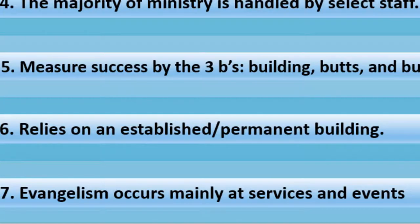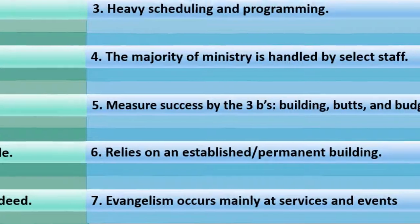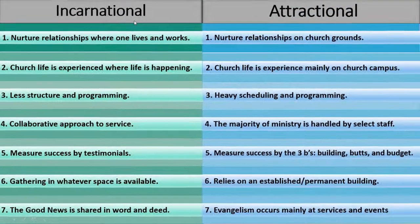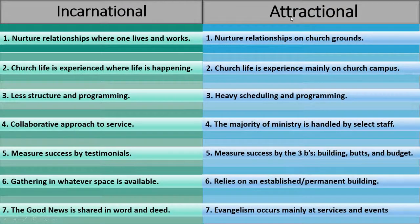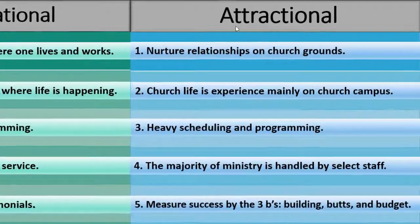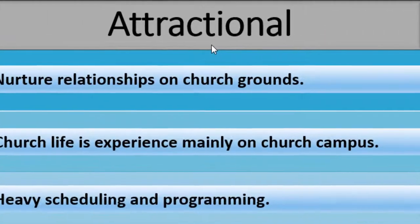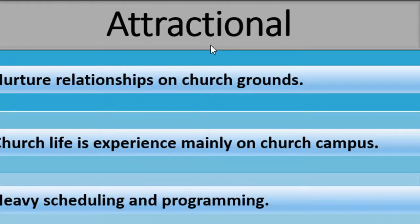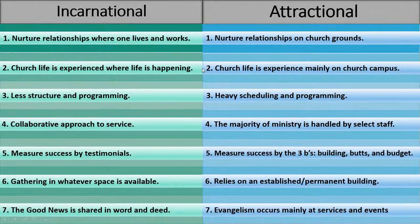After seeing the comparison between the two models, would you identify more with incarnational or attractional? The predominant church model in America is the attractional model, which focuses heavily on creating services, events, and activities to urge outsiders to leave their turf and join the culture of the Christian community. Some will be drawn by these attractive methods, especially those who already attend church or have some kind of church background.